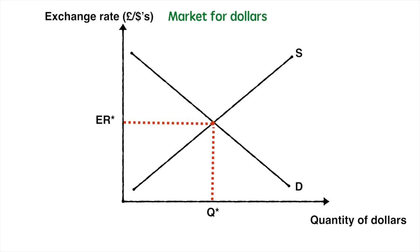We change quantity to quantity of dollars to clarify the currency market we are discussing. Finally, we change equilibrium price P* to ER* to reflect the equilibrium exchange rate. If you're drawing a diagram for exchange rates, I highly encourage you to use this format.